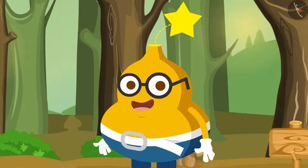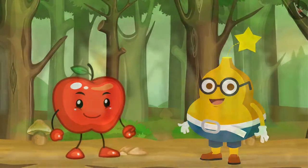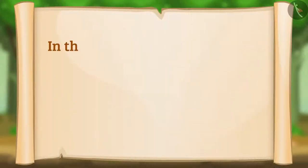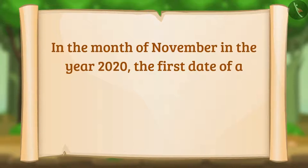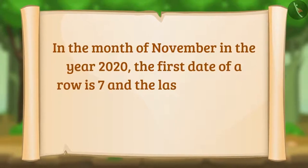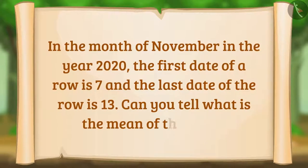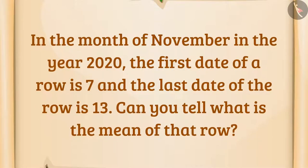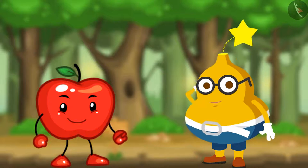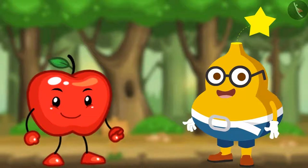Appy says: 'Okay, so my first puzzle is: in the month of November in the year 2020, the first date of a row is 7 and the last date of the row is 13. Can you tell me what is the mean of that row?' Fruity says: '10.'